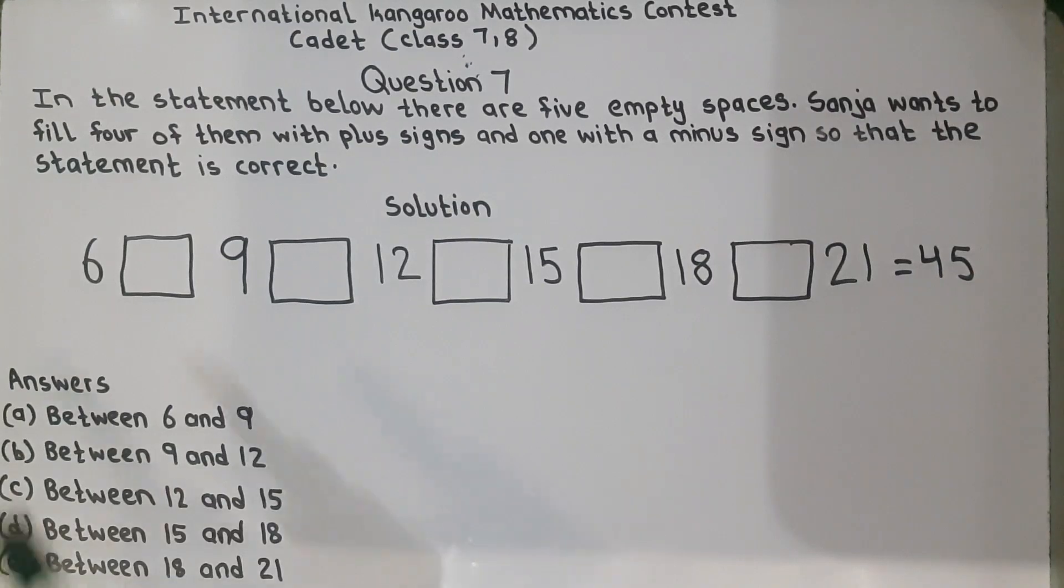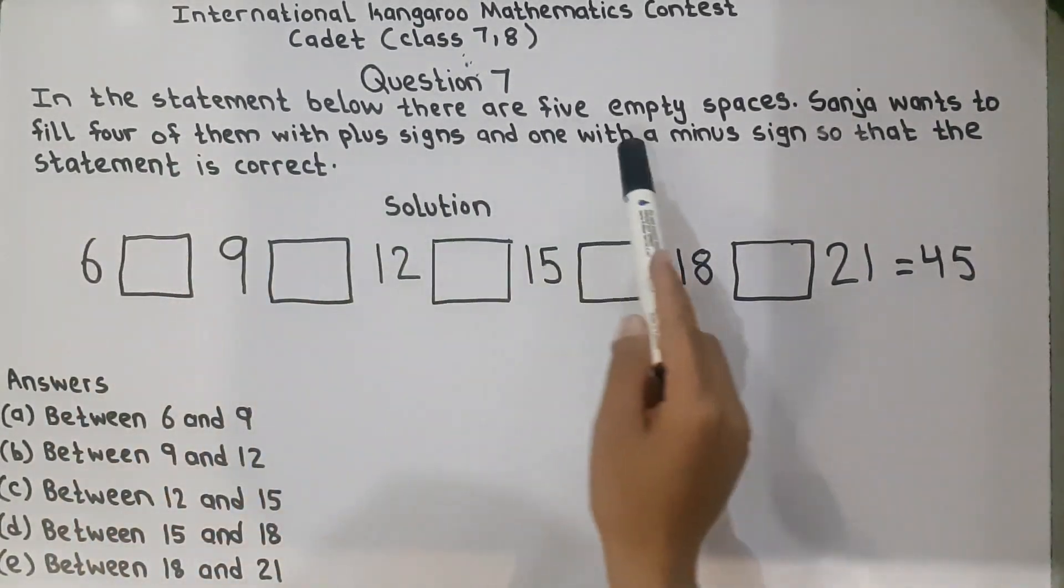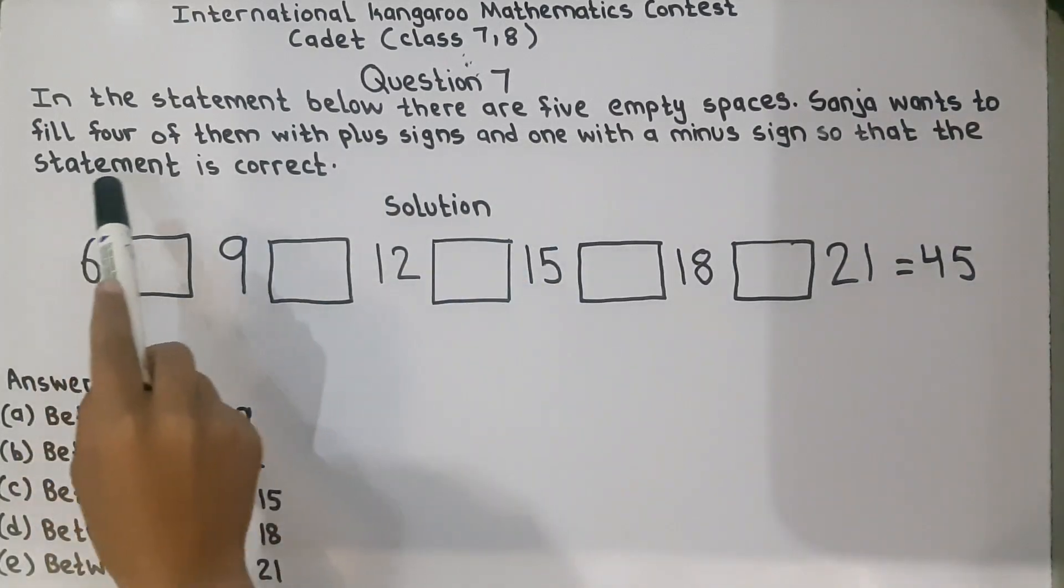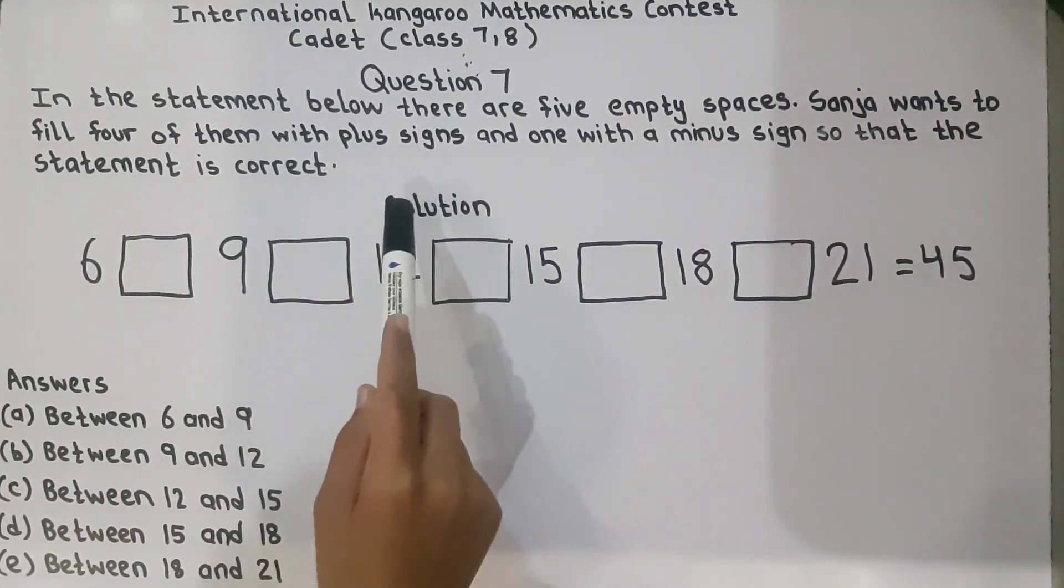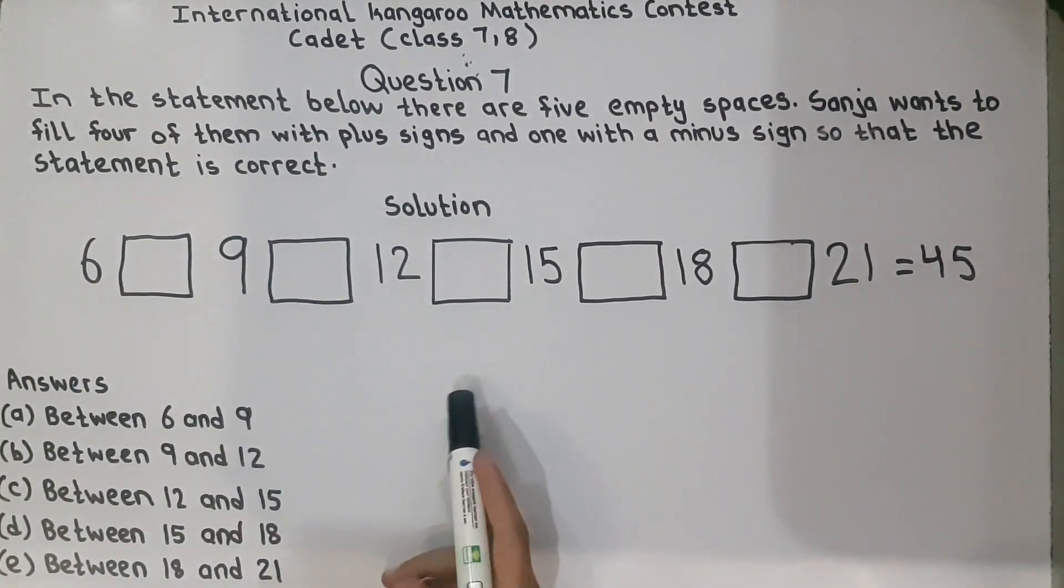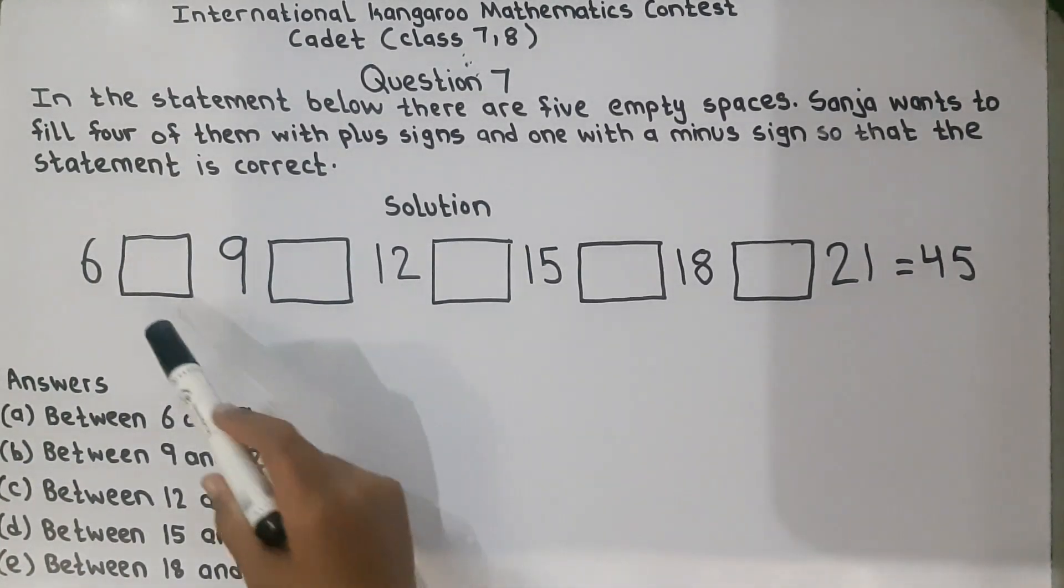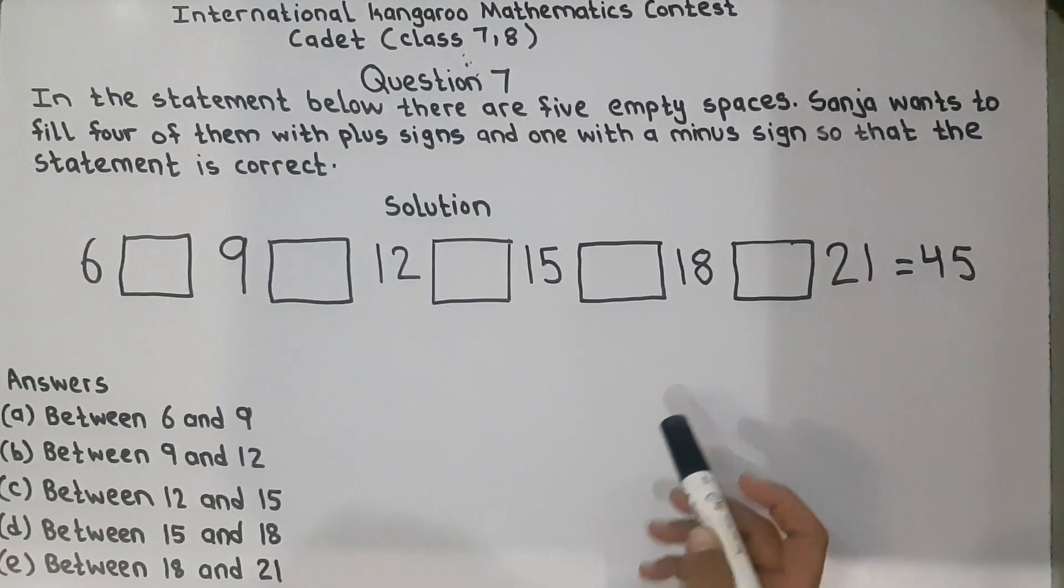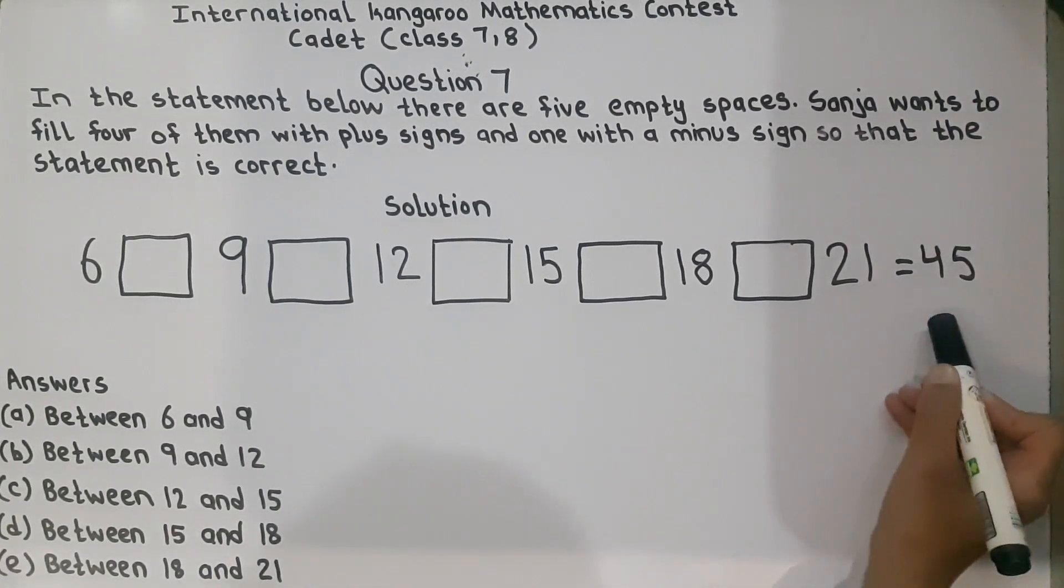So the question is, in the statement below there are 5 empty spaces. Sanja wants to fill 4 of them with plus signs and one with a minus sign so that the statement is correct. In these 5 boxes, 4 boxes need to be filled with plus signs and one box with a minus sign so the answer becomes 45.